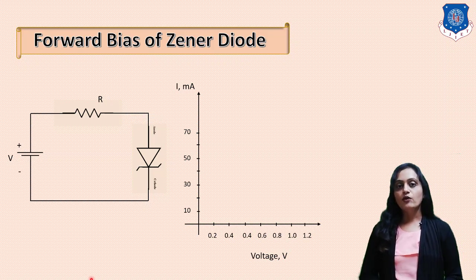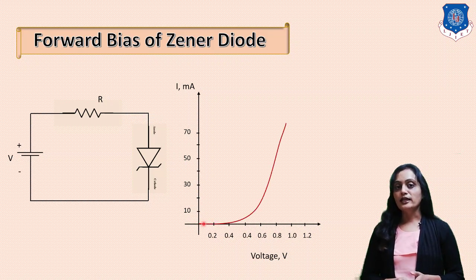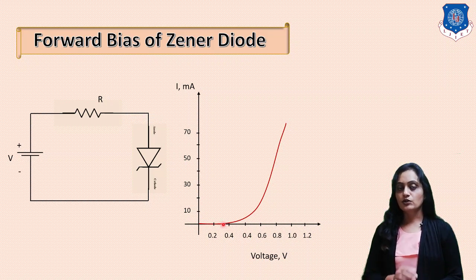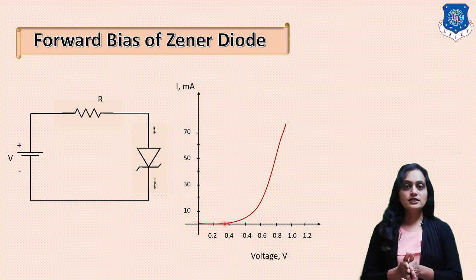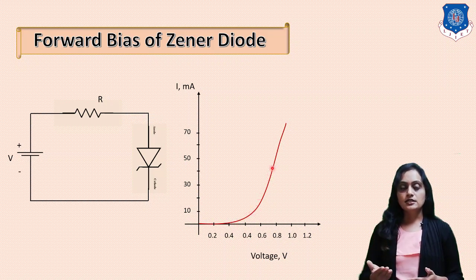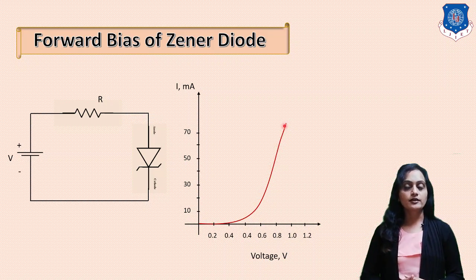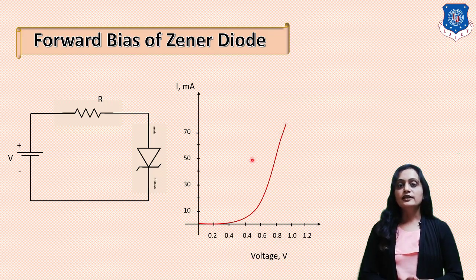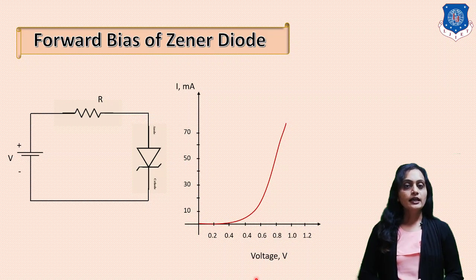The graph of voltage versus current is being plotted. As we increase the voltage, you will find initially there is no current flowing — current is almost zero. After a certain voltage, there is an increase in the current. After the cut-in voltage, the current starts flowing. This is similar to the normal PN junction diode VI characteristic, so the VI characteristic of the Zener diode and the PN junction diode in the forward bias region is the same.